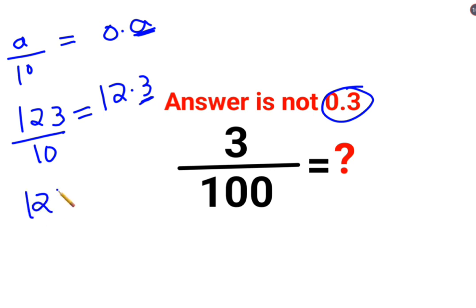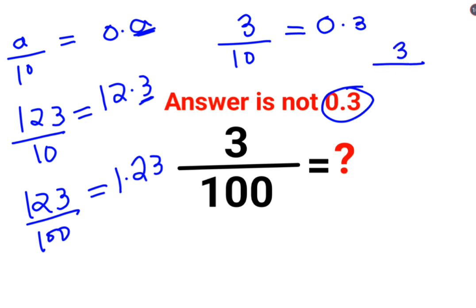Now let's do 123 divided by 100. That can be written as 1.23. Now what happens if the number is just 3 divided by 10? It is just single 3, right? So it will be 0.3, correct? If it is single 3 divided by 100, then it cannot be 0.3, right? It will be 0.03.